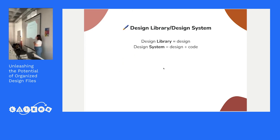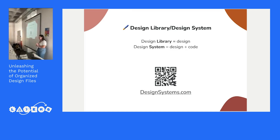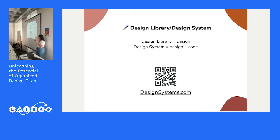The second topic is design libraries. There is a difference: a design library is related to design, while a design system is related to design and code. What does that impact in our daily lives? I referenced designsystems.com — it's a generic website but it has a really good set of design systems to look at. The key point is that if our design library or system is outdated, it can cause huge inconsistency with development and other teams, creating a waterfall of problems if you don't keep it updated.